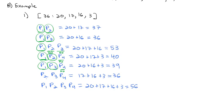In the coalition of Players 2, 3, and 4: removing Player 2 leaves 16 plus 3, only 19 votes — not enough for quota, so Player 2 is critical. Removing Player 3 leaves 17 plus 3, only 20 votes — short of quota, so Player 3 is critical. Removing Player 4 leaves only 33 votes, so Player 4 is also critical. In this coalition, if any of the three were missing, quota would not be reached.